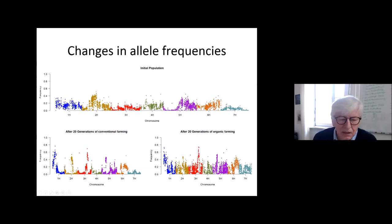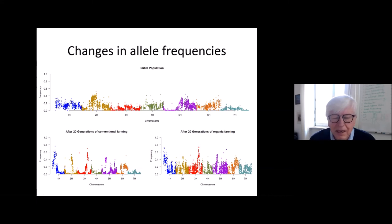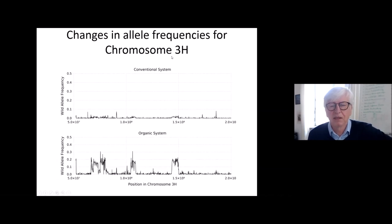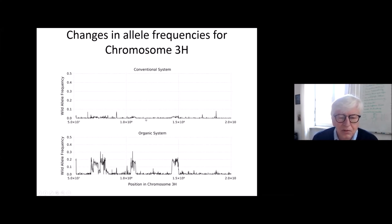It may be that different alleles are needed in the organic system versus the conventional system, where nitrogen is unlimited and fungicides and insecticides are applied. Looking in more detail at chromosome 3H, we clearly see an increase in wild-form alleles at specific regions in the organic system, while no such increase is found in the conventional system.